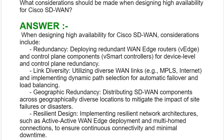First point: redundancy — deploying redundant WAN edge routers, vEdge and control plane components, and vSmart controllers for device and control plane redundancy. Next point is link diversity: utilizing diverse WAN links, for example MPLS and internet, and implementing dynamic path selection for automatic failover and load balancing.